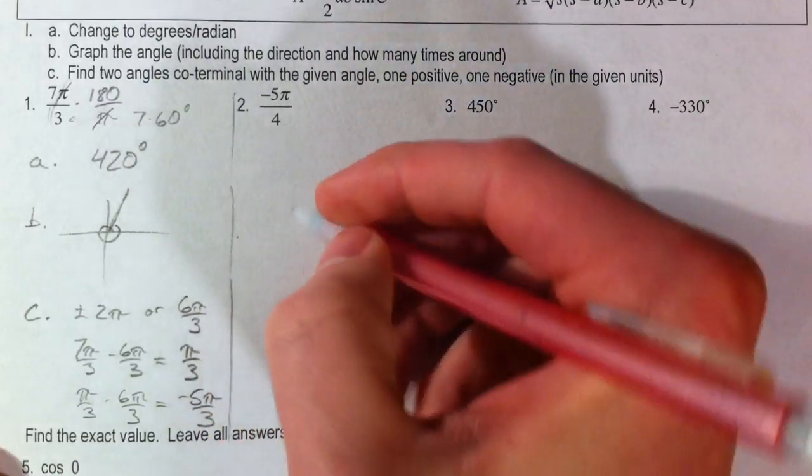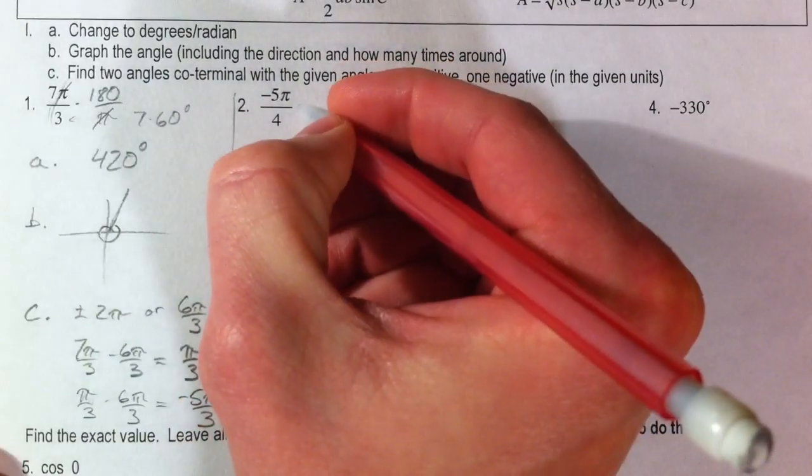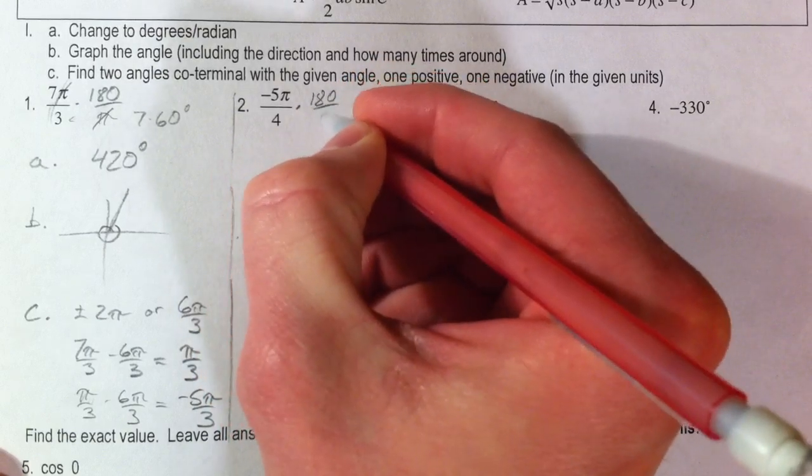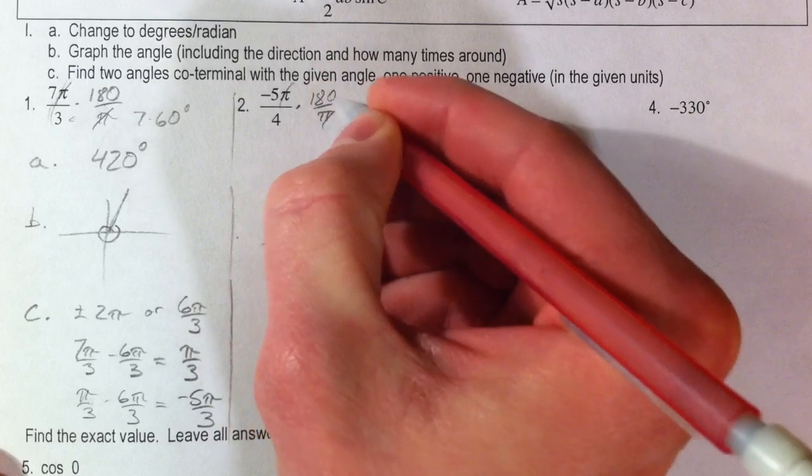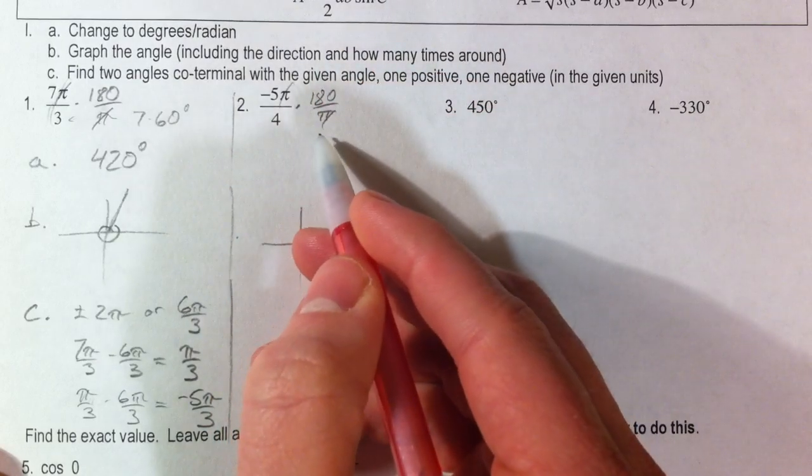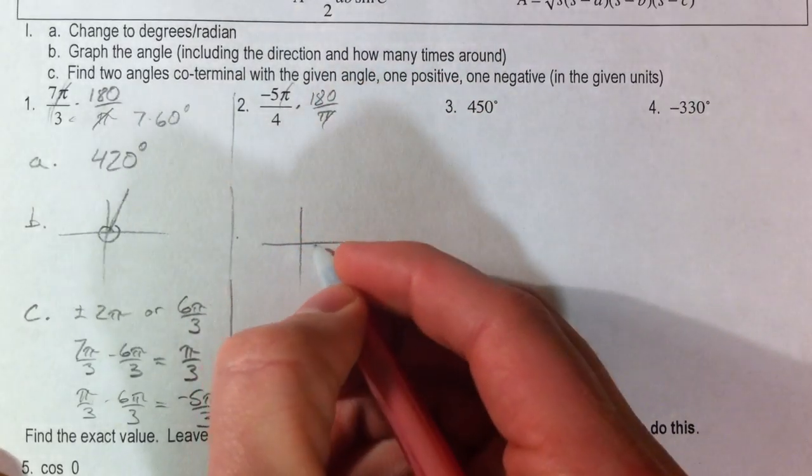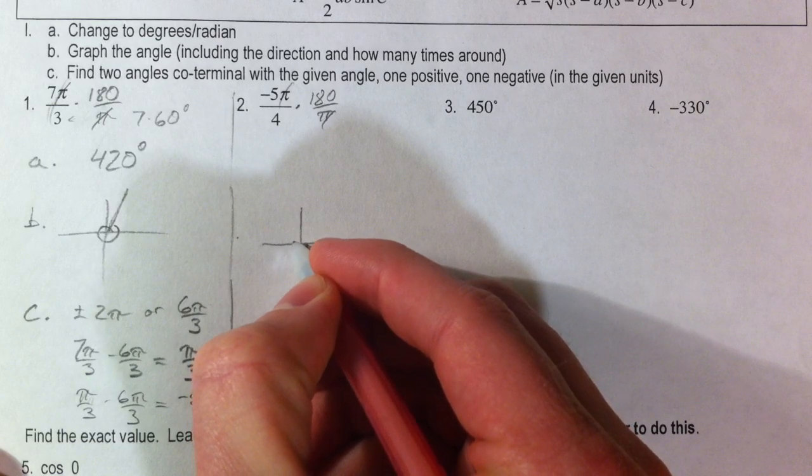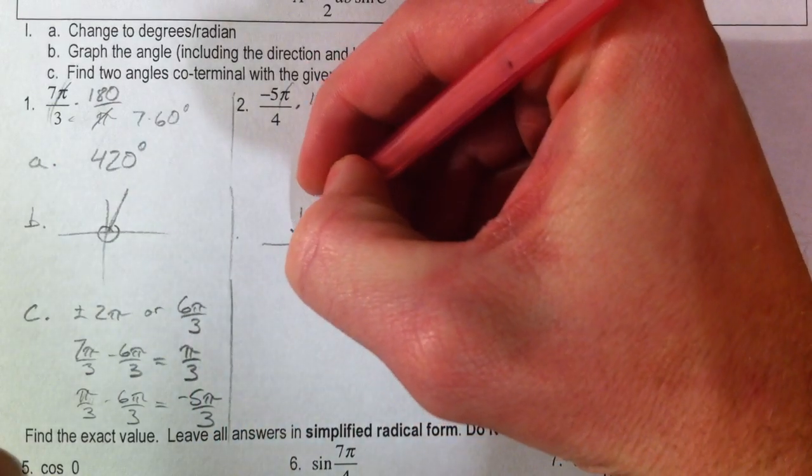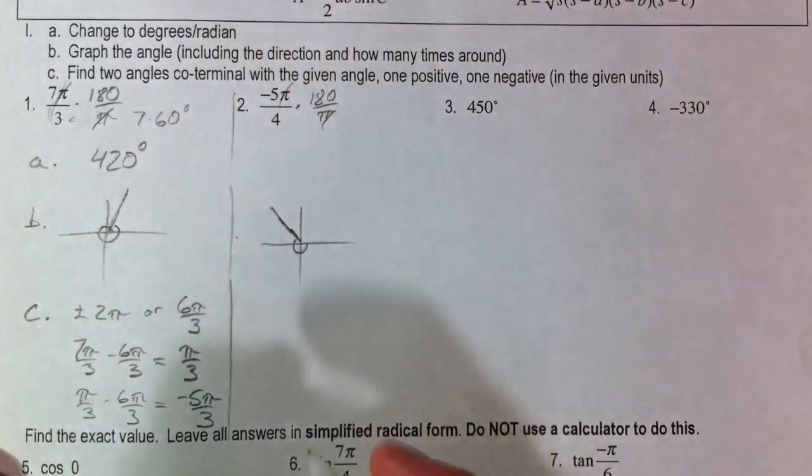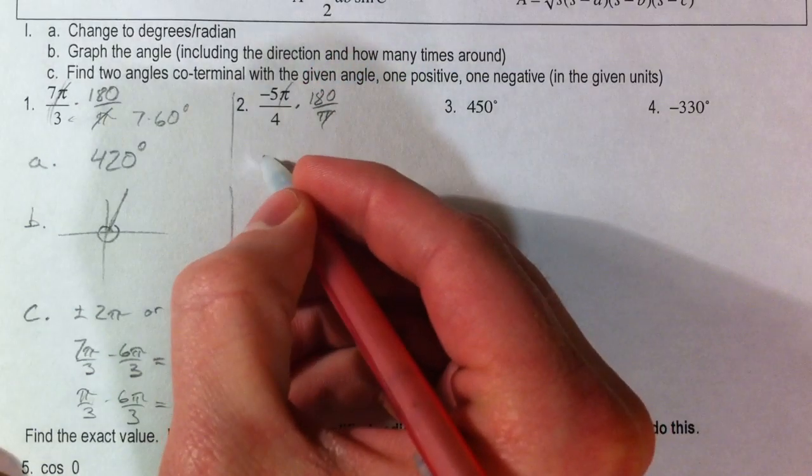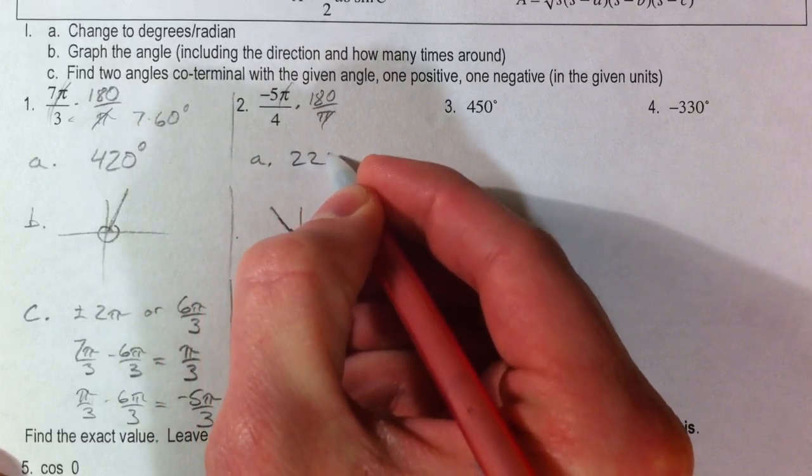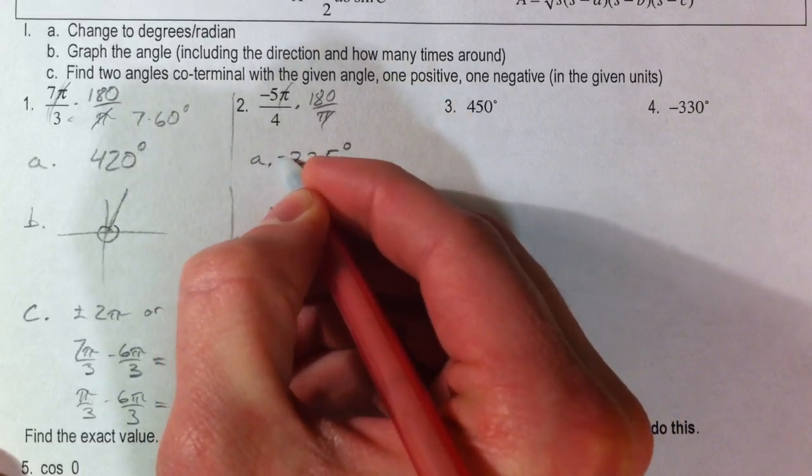Alright, negative 5π over 4. Those are 45 degree angles, because if you multiply by 180 over π, the π's cancel out, 180 divided by 4 is 45. And so we've got 1, 2, 3, 4 45s, and 1 past it. And so we're right here for our angle. And so that's going to be 225 degrees. And a negative one.